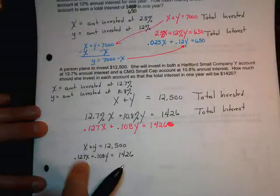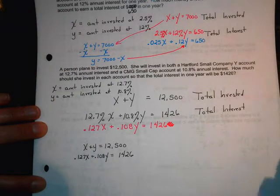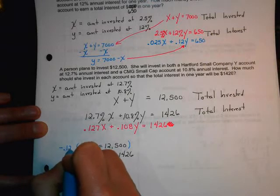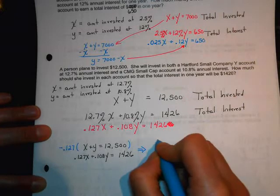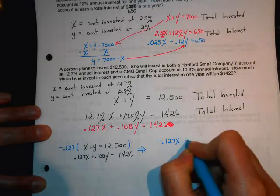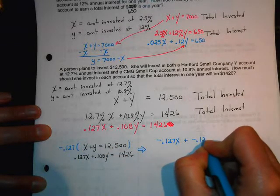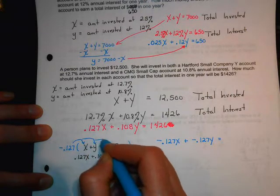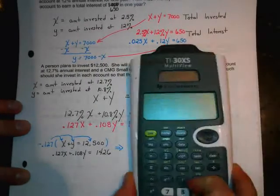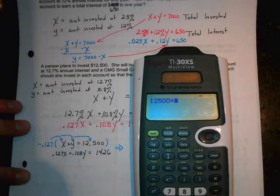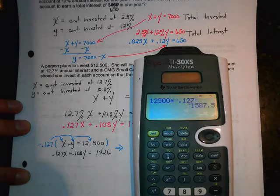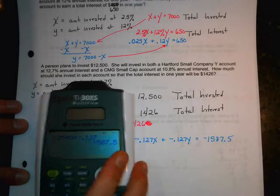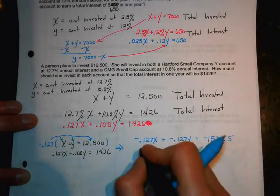If you want to eliminate the X, and that's a great way to do this, we've got to get a negative 0.127 in front of that X. So, I'm going to multiply both sides of this equation by negative 0.127. So, this is what it's going to look like. Negative 0.127X plus negative 0.127Y. Equals, and then we've got to remember to multiply everything. So, on the other side of the equation, we've got that 12,500, and it's going to get negative 0.127 multiplied by it. So, that'll be negative 1,587.5.